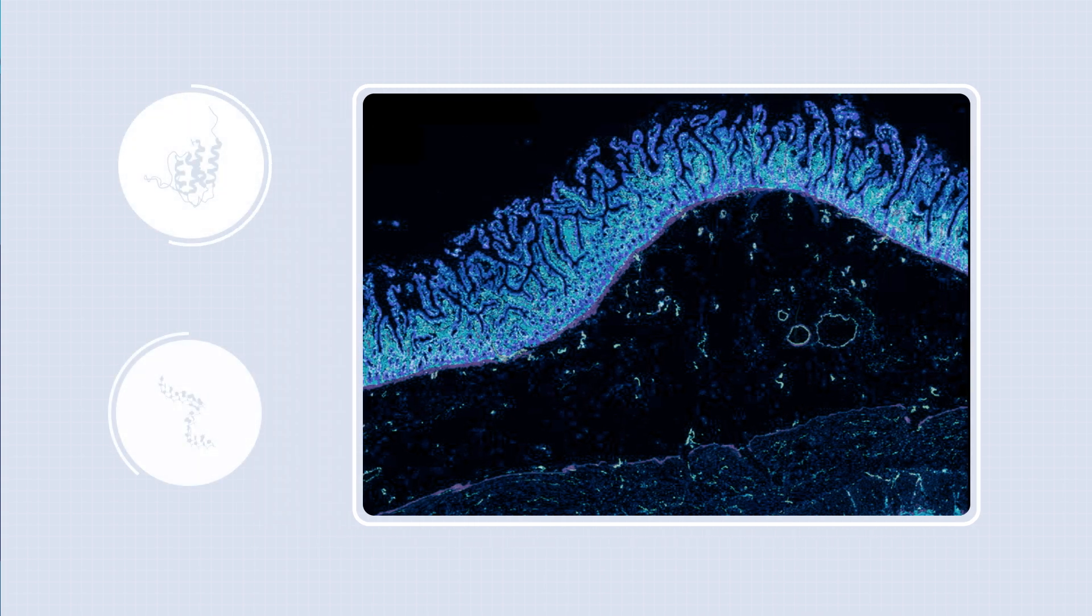To create these maps, we use multiple technologies to get as complete a picture as possible of cells at the molecular level. That means looking at the proteins and RNA molecules that make up our cells and which help us categorize them into different types.